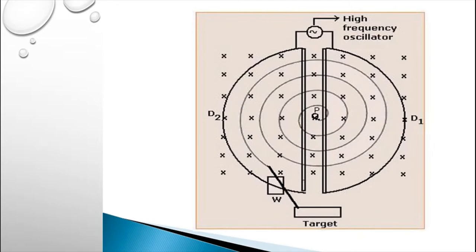Thus, the particles move with increasing radius and when they come near the edge, they are taken out with the help of deflector plates. Finally, when the charged particle is in the marginal region with maximum kinetic energy, it gets deflected and hits the target.